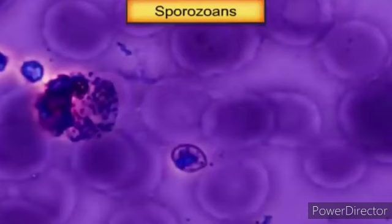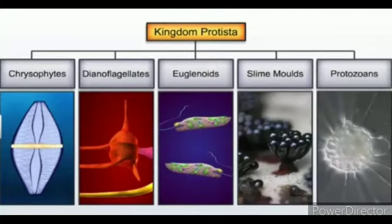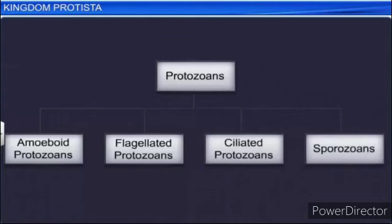In summary, Kingdom Protista includes: Chrysophyta, Dinoflagellata, Euglenoids, Slime Molds, and Protozoans. Protozoans are divided based on their locomotory structure into amoeboid protozoans (pseudopodia), flagellated protozoans (flagella — Trypanosoma, sleeping sickness), ciliated protozoans (cilia — Paramecium), and sporozoans (spore-producing, no locomotory structure). Thank you.